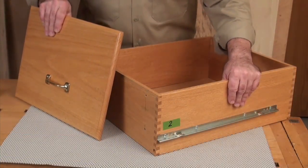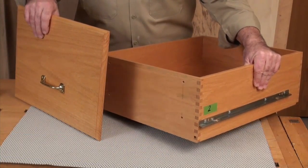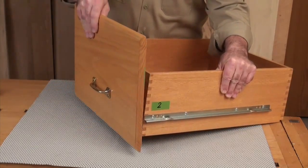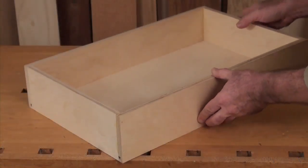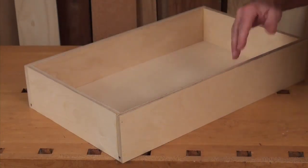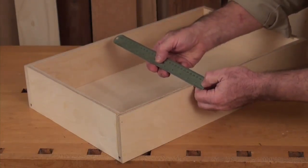In most of the drawers that we'll make today, the drawer box itself is separate from an applied front. This is also called a false front. Typically, the sides, front, and back of a drawer box are all the same thickness, about one-half inch.